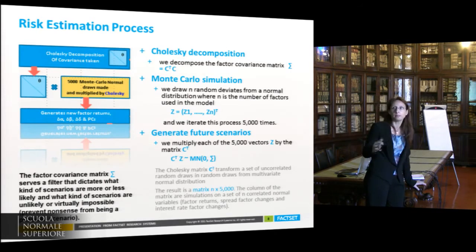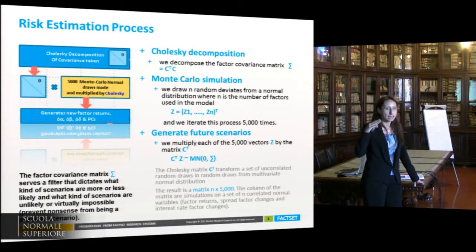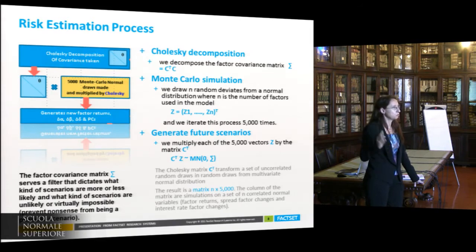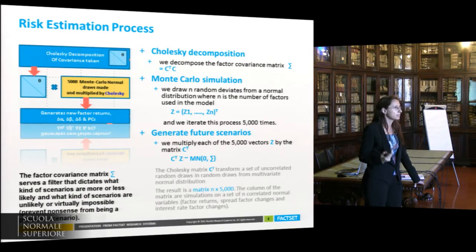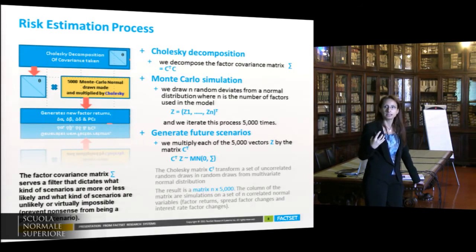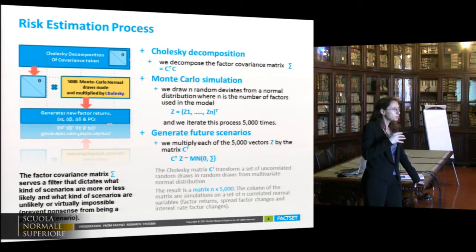We generate 5,000 random deviates from a normal distribution that are uncorrelated, and then multiply each of these vectors on the left by the Cholesky matrix. This gives us a multivariate normal distribution with precisely the covariance matrix of the factors in the model. We end up with a matrix that has N rows and 5,000 columns, where each column is a scenario. The role of the covariance matrix here is to act as a filter, preventing nonsense scenarios — telling us which scenarios are likely and which are unlikely or impossible.